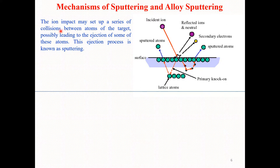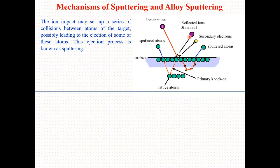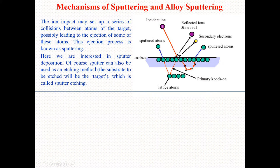This can be taken as a definition for the sputtering process. As clearly described in this figure, normally we have the target atoms arranged in a lattice. We have incident ions, and as they are being accelerated toward the target by the DC supply, they strike the target. As a result, they eject atoms — called sputtered atoms — from the surface, while the ion is reflected back and becomes neutral. We also have secondary electrons as a result. This is how the sputtering process occurs.